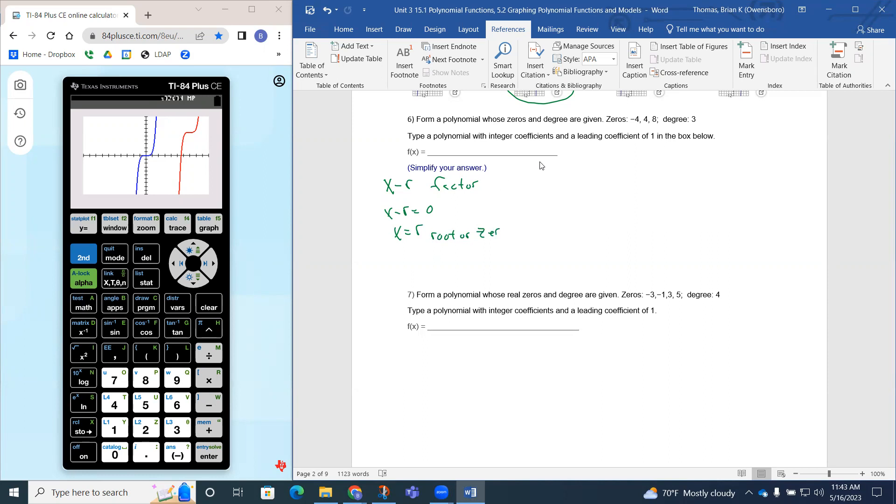So what we want to do, this x equals r is kind of what we got right now. We want to move this back one and write this as x minus r. So right now we have x equals negative four, we have x equals four, and we have x equals eight. We want to change these all back to factors. So we want to go back a step. In other words, if you notice, the signs are going to change.